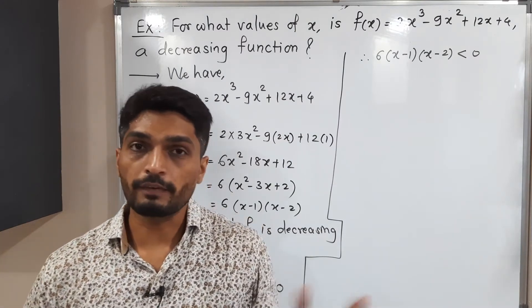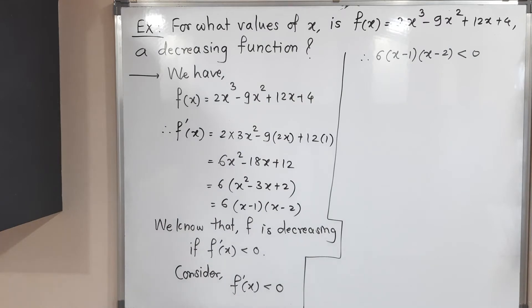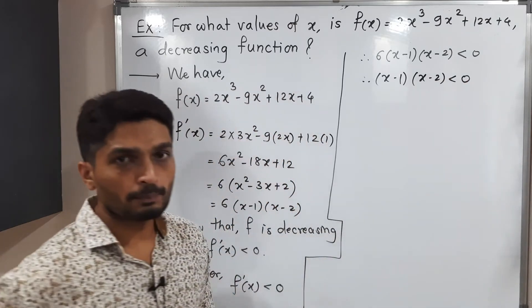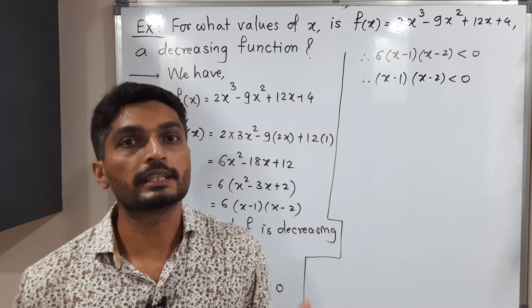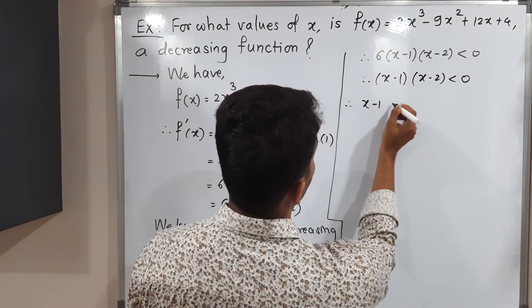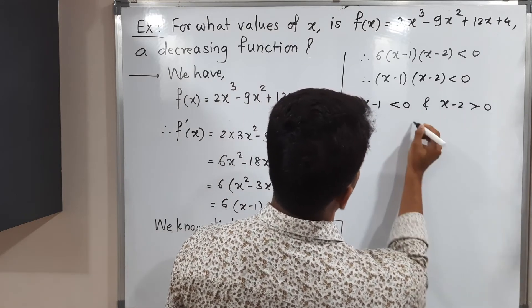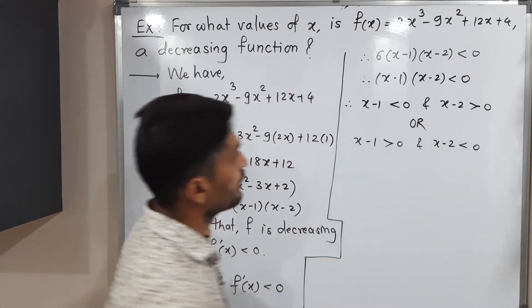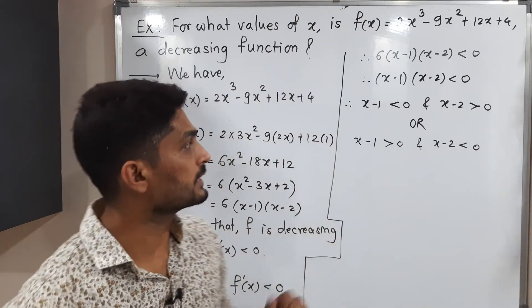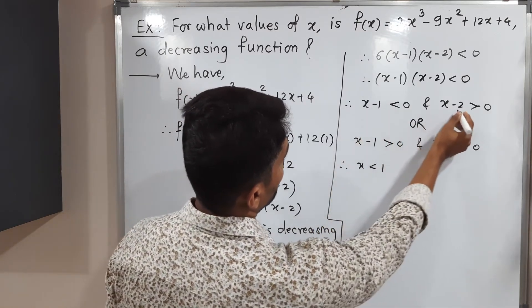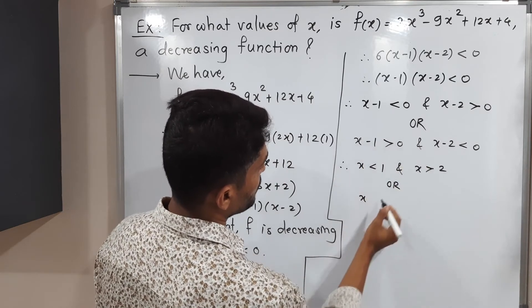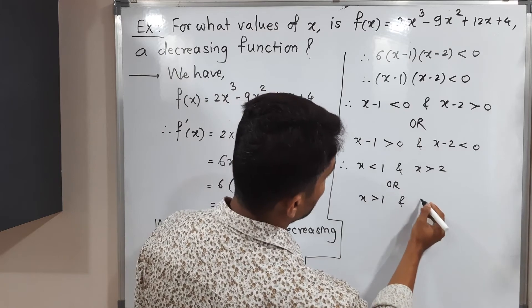Here 6 is a positive constant, so dividing both sides by 6 preserves the inequality. Therefore (x − 1)(x − 2) < 0. Since the product of two numbers is negative, one must be positive and the other negative. So either: (x − 1) < 0 and (x − 2) > 0, giving x < 1 and x > 2; or (x − 1) > 0 and (x − 2) < 0, giving x > 1 and x < 2.